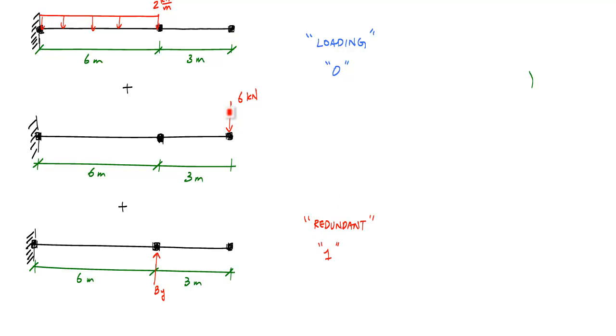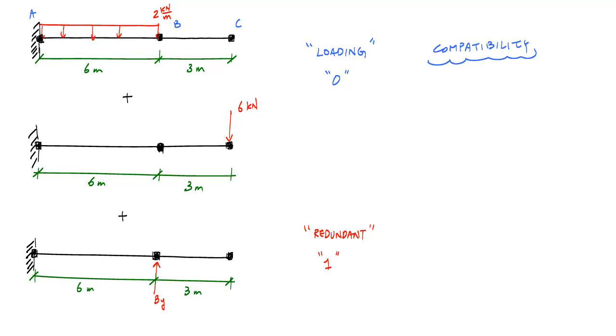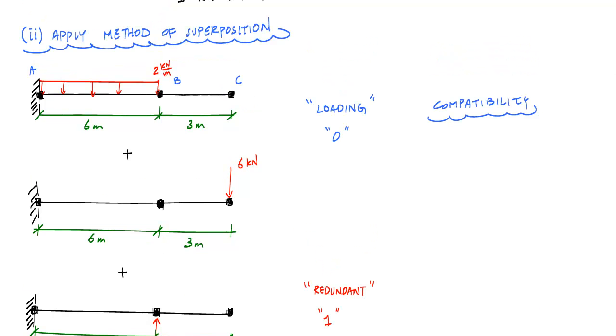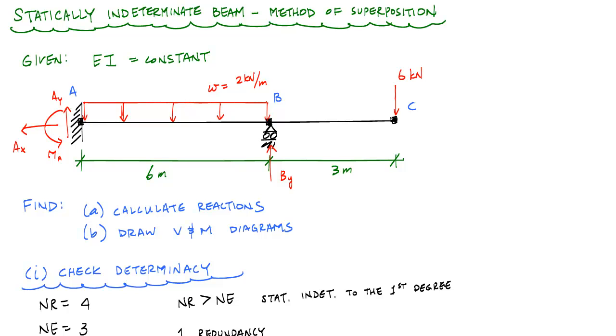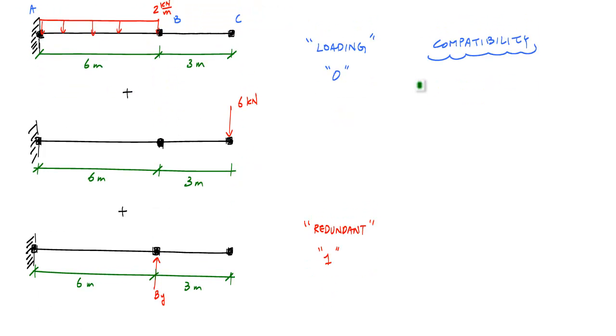Using the three parts that I've broken up my original structure into, I want to try to come up with a compatibility relationship. The way that we're going to do that is to look at the deformation in each of these parts and look at it in reference to the original structure, which was given here. What I know is that at my redundant, that vertical deflection at point B should be zero, which is six meters here. So if I said that this is the x and here's v for deflection in the vertical, the deflection at point B, which is the deflection at six meters, is equal to zero.